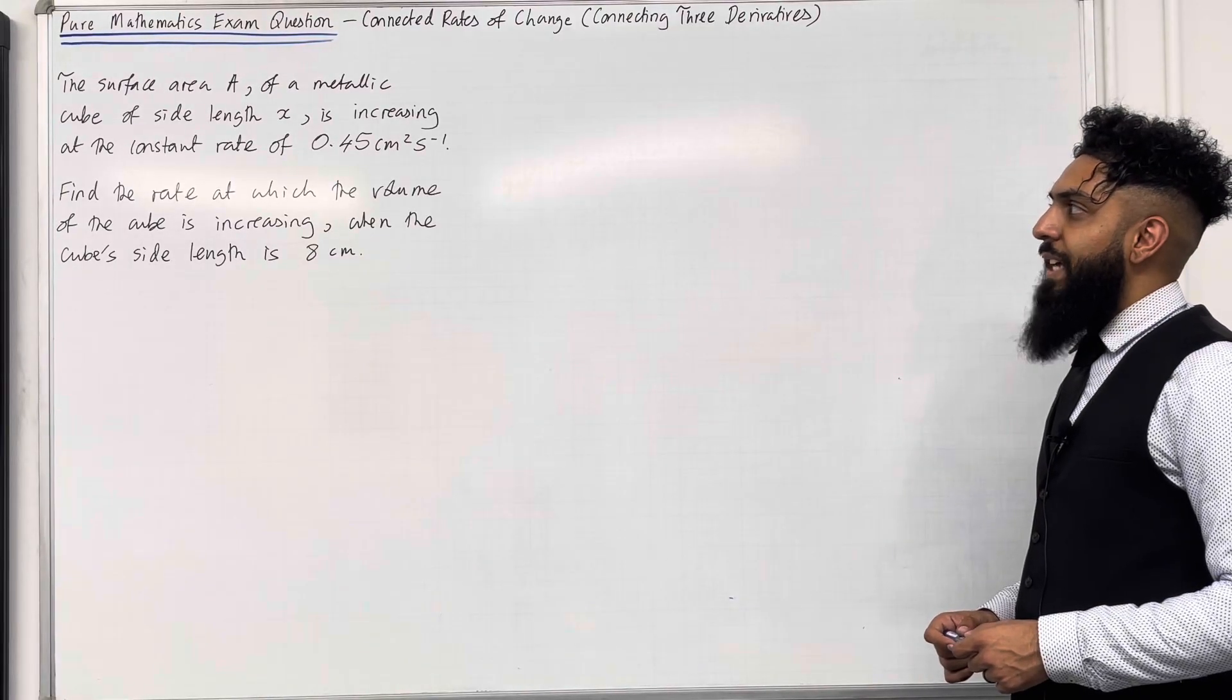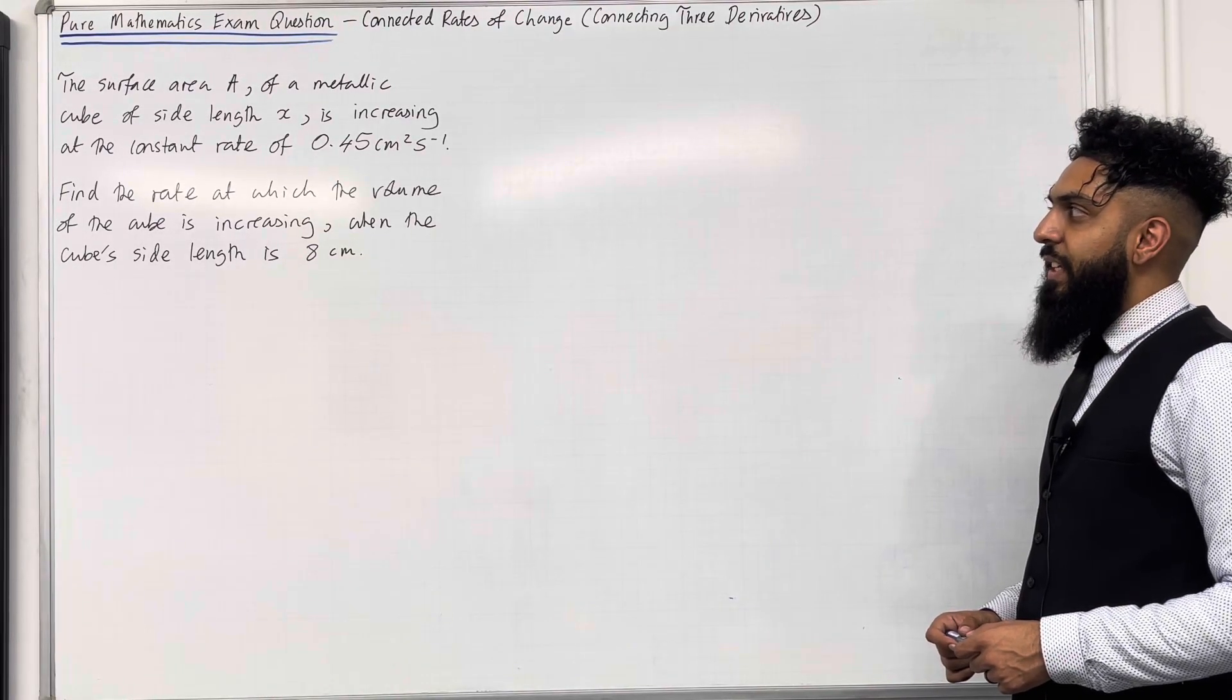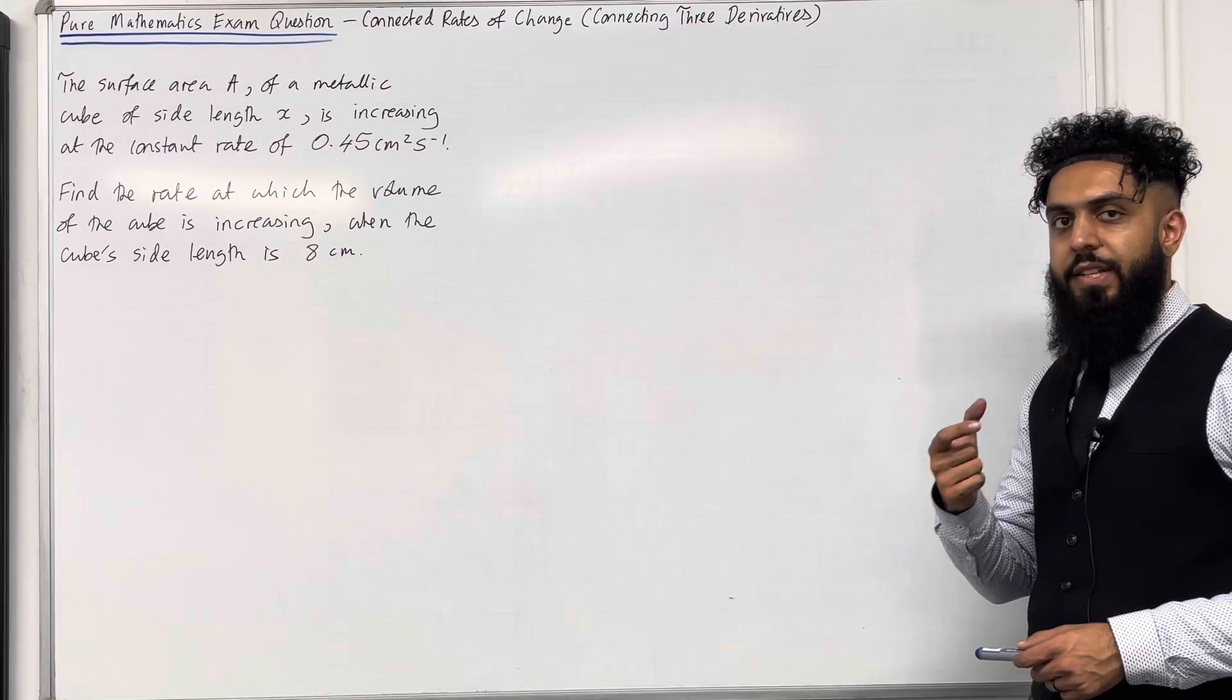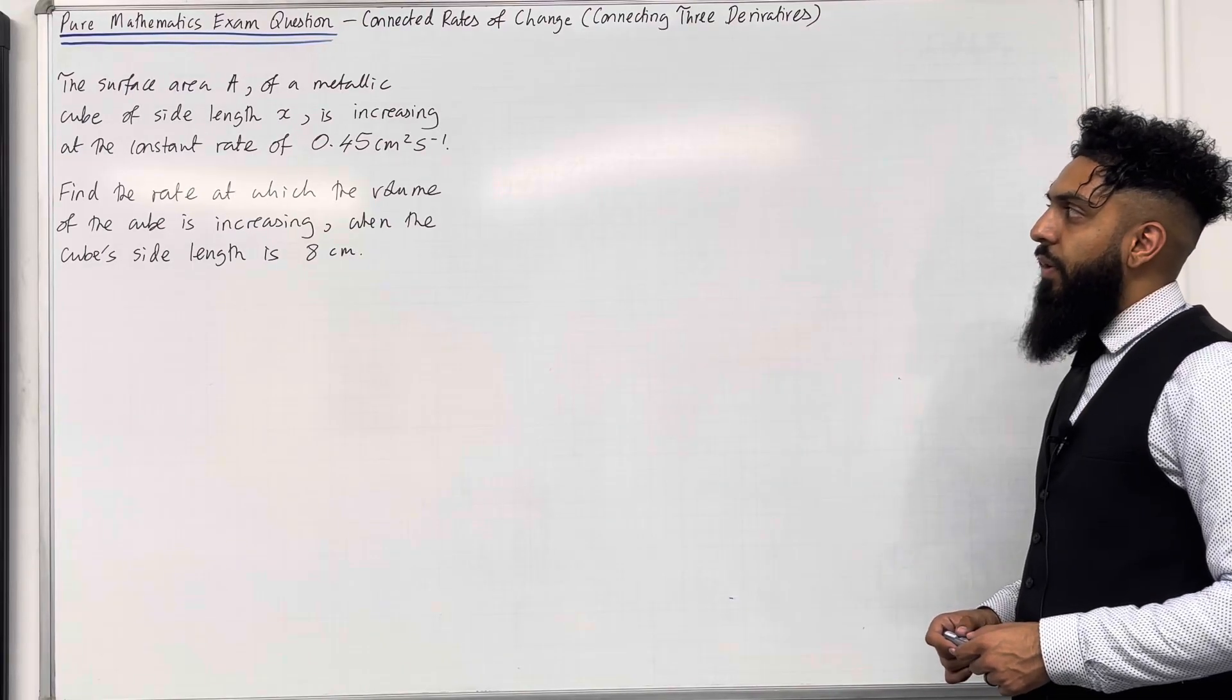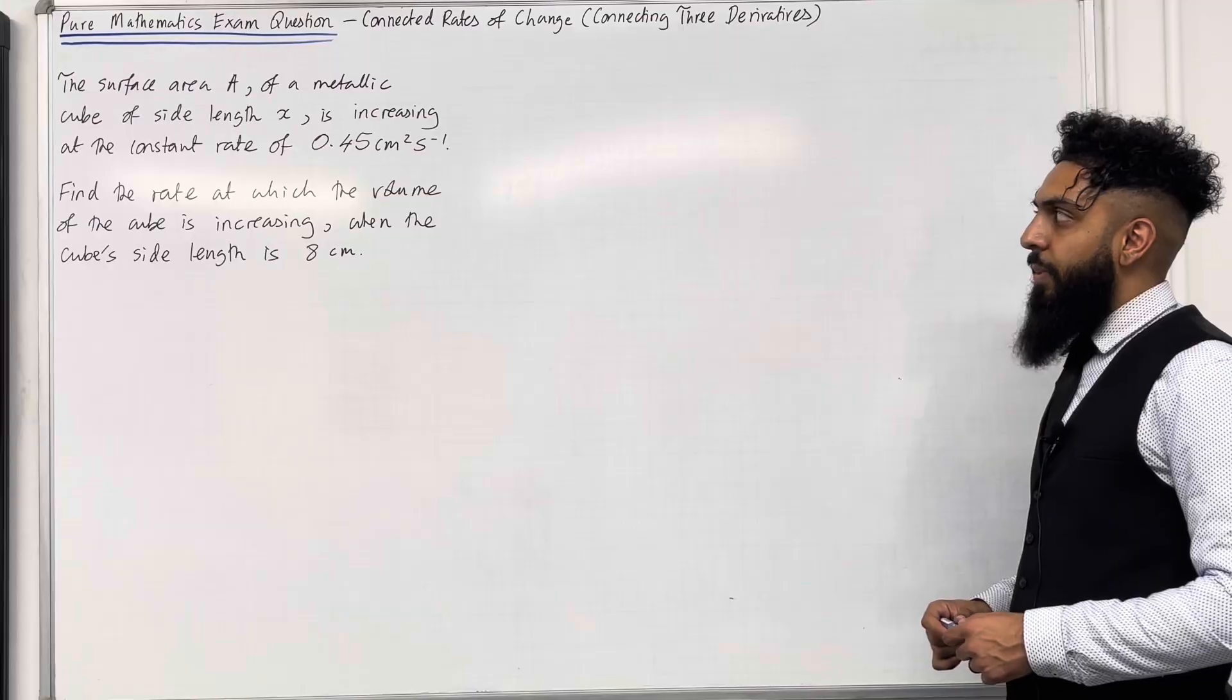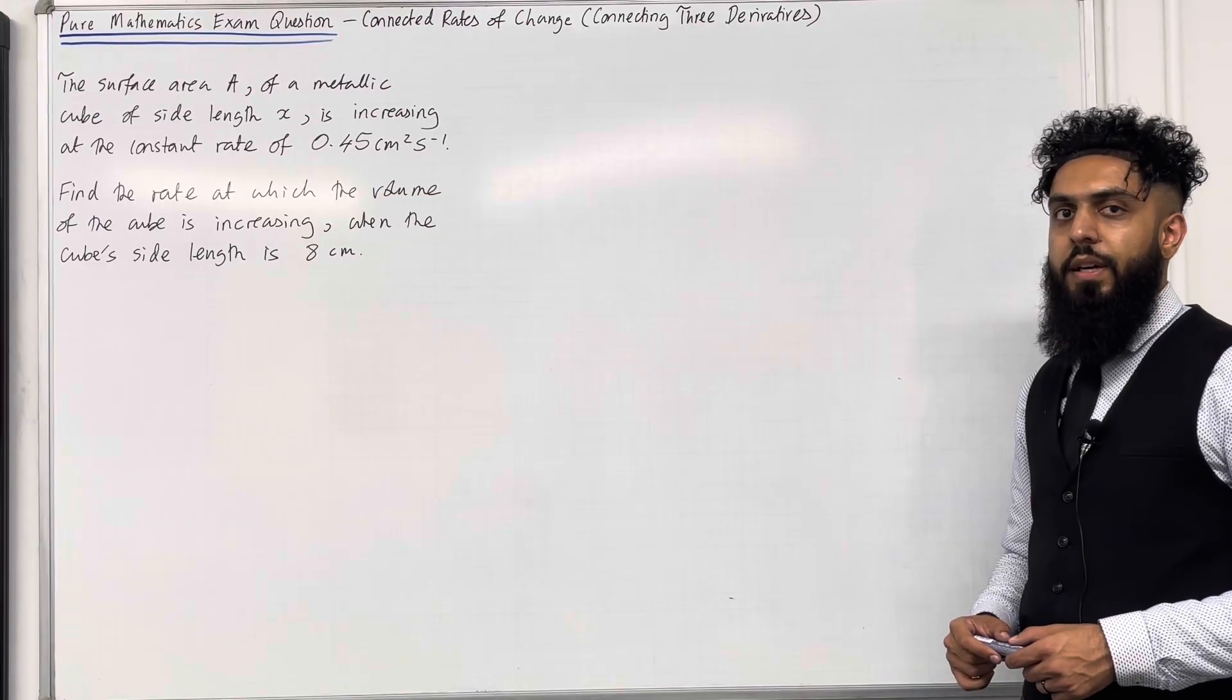Here is the exam question. The surface area A of a metallic cube of side length X is increasing at the constant rate—the word rate indicates differential—of 0.45 centimeter squared per second. Centimeter squared per second indicates surface area over time.